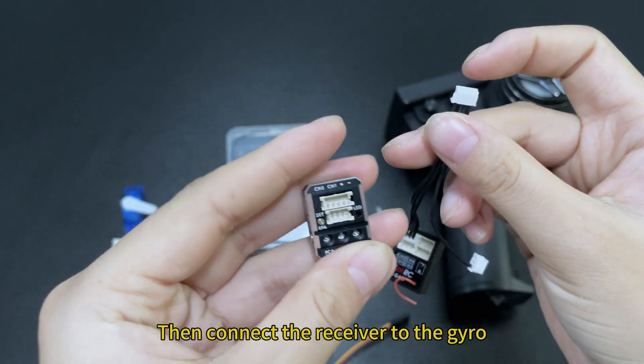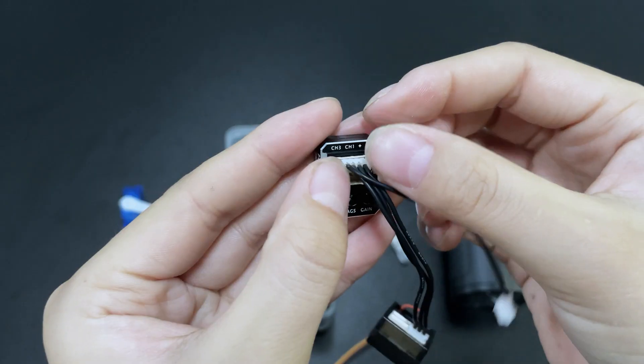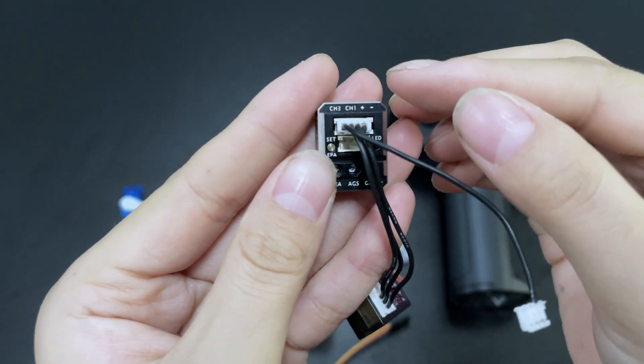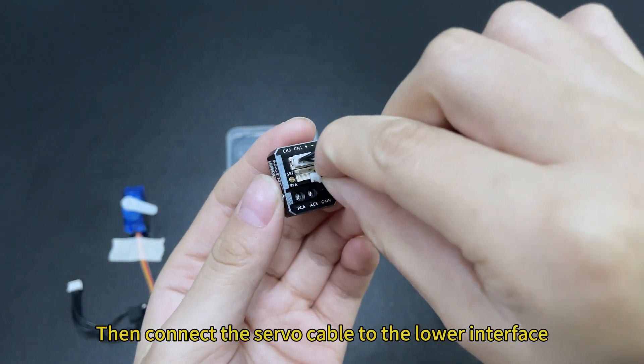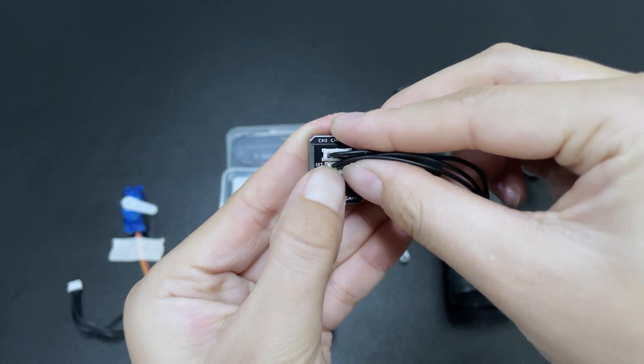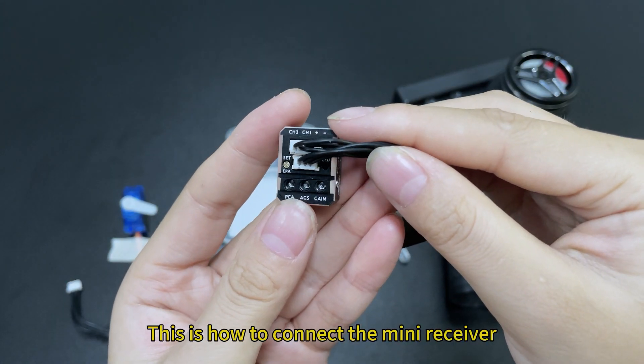Then connect the receiver to the gyro. Then connect the servo cable to the lower interface. This is how to connect the mini receiver.